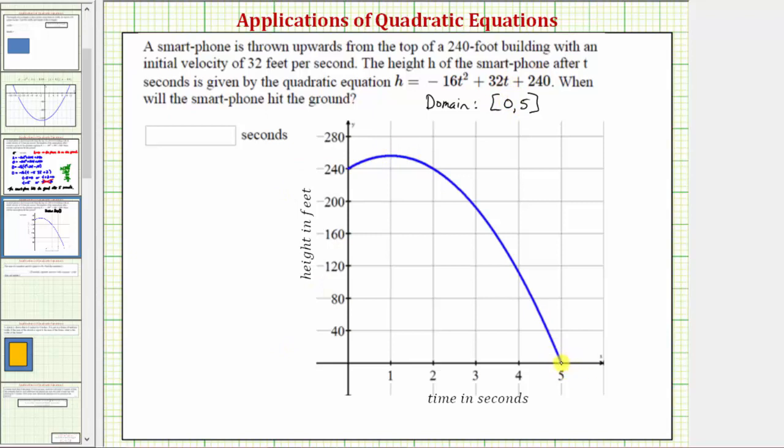Past 5 seconds, the height would be negative, which also doesn't make sense for the application problem. So algebraically, we found this point here, which would be the point five comma zero, meaning after five seconds the height of the phone is zero, meaning the phone is on the ground. I hope you found this helpful.